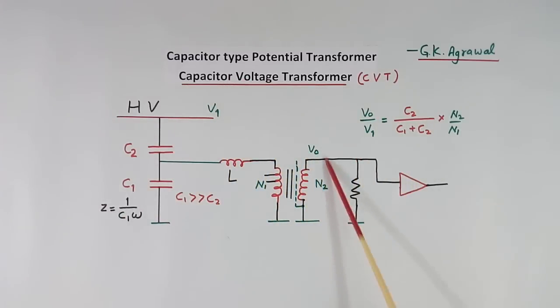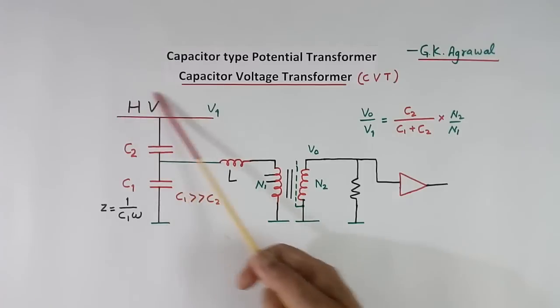This is CVT. I have shown here only one line. There will actually be three high voltage lines: A, B, C or R, Y, B. So there will be three like this.